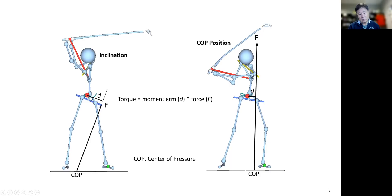The moment arm is the perpendicular distance from the center of rotation to the line of action of the force. The torque generated is this moment arm times the force. Particularly at this position, the inclination of the force arrow is really important because that determines the length of the moment arm.